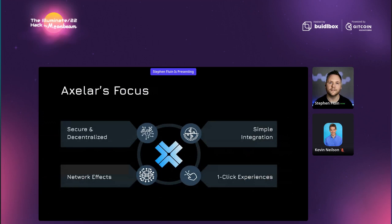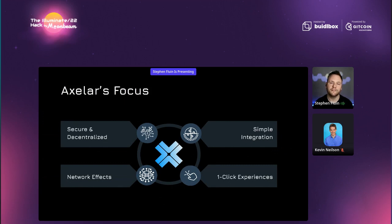The approach Axelar uses is built on four key principles. First is being secure and decentralized — Axelar is a blockchain built on decentralized consensus, an open network where people can build their own validators and run their own nodes. There's a strong focus on security: rather than shipping fast, the goal is to ship right. From that foundation, as the network grows, every time a new chain gets added — whether a Cosmos chain, an EVM chain, or other chain classes in the future — there's a magical network effect where every connected chain becomes more valuable because it now has a communication channel to all the others.